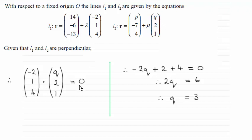So in the usual way we've got minus 2 times Q plus 1 times 2 plus 4 times 1 equals 0. Giving us that, just solve the equation and Q turns out to be equal to 3.